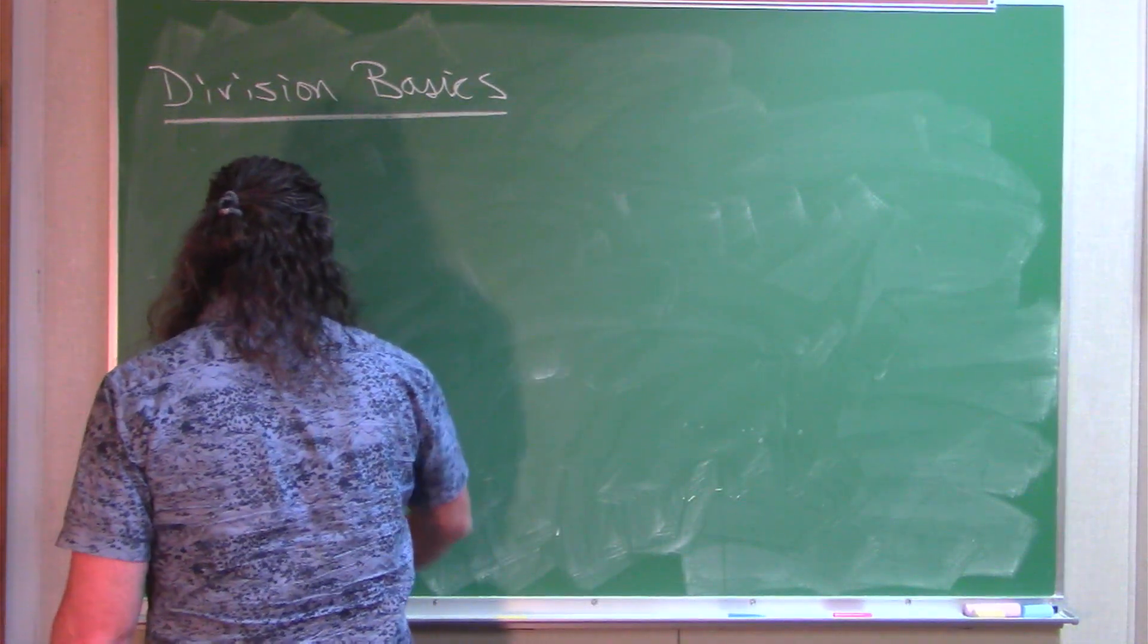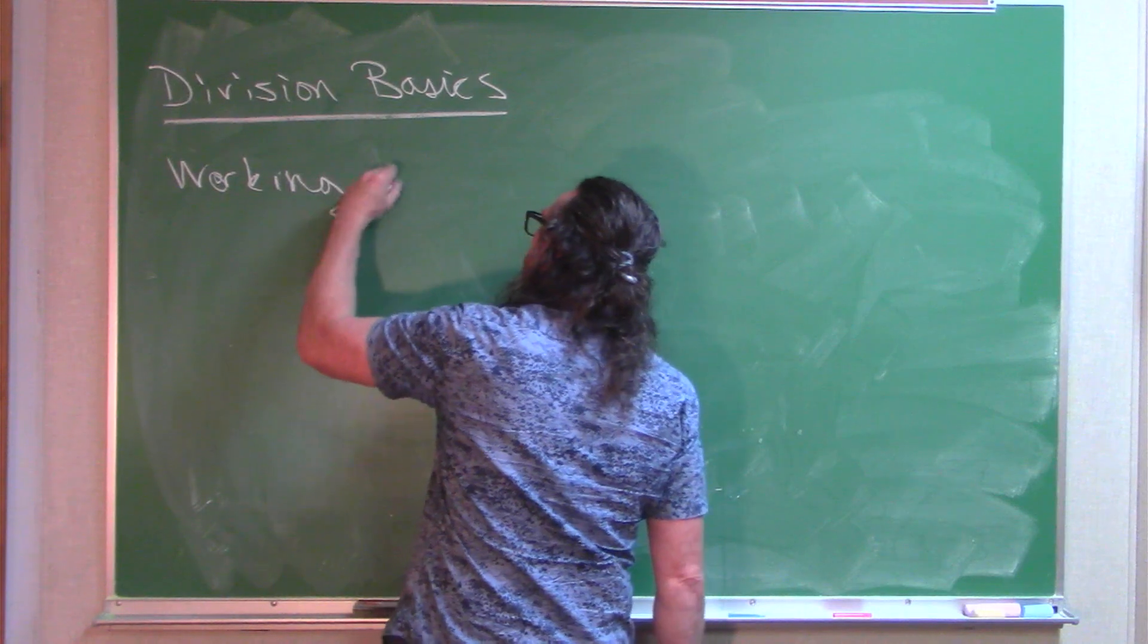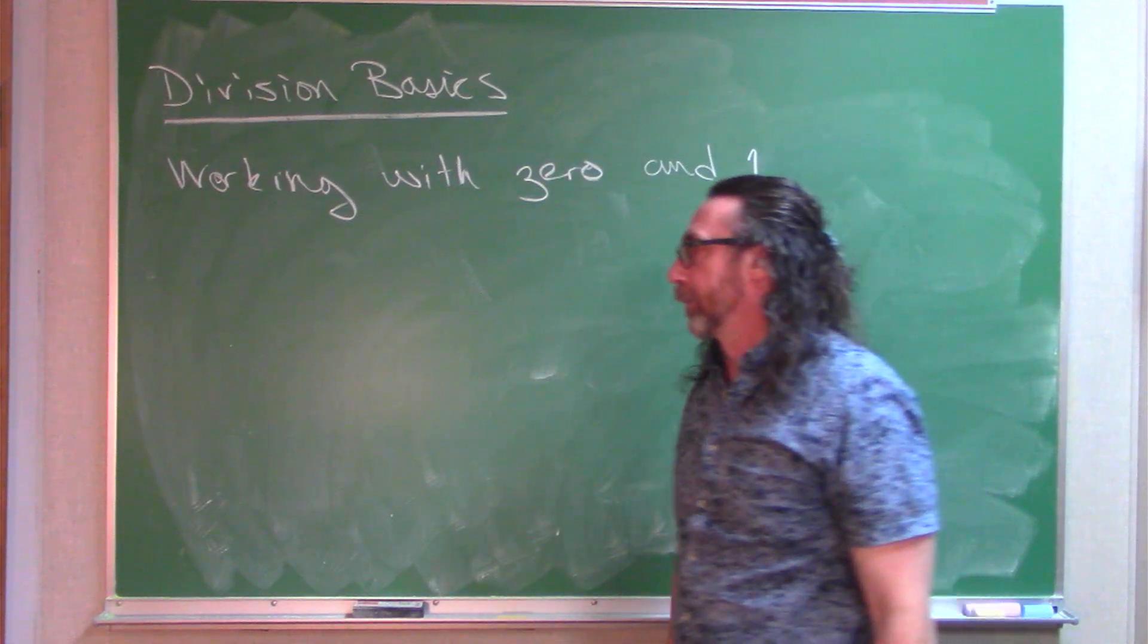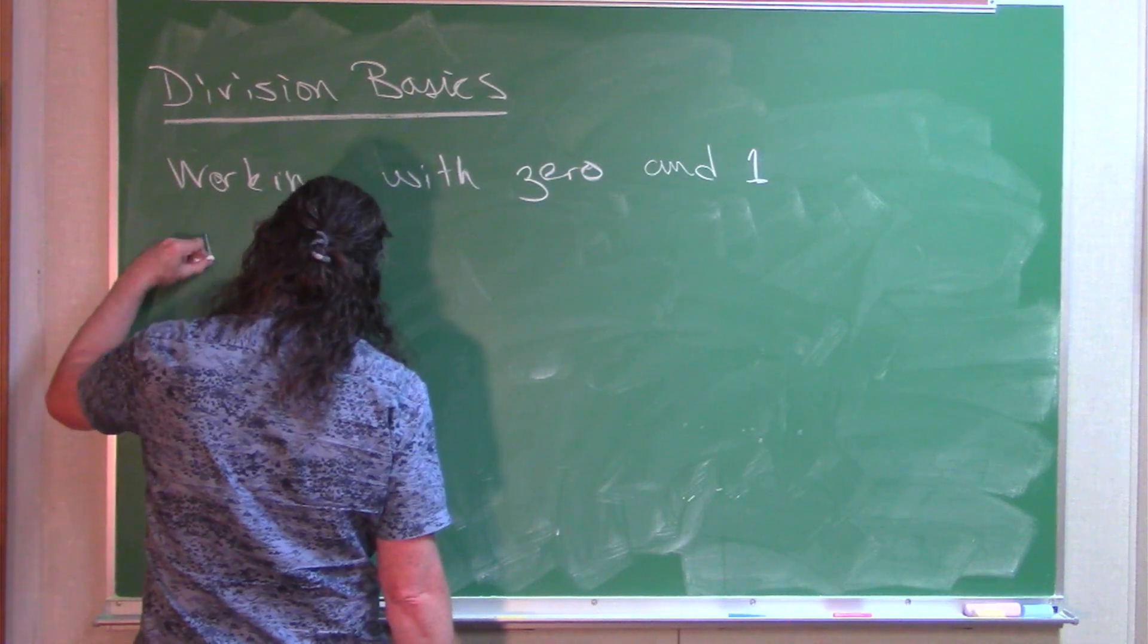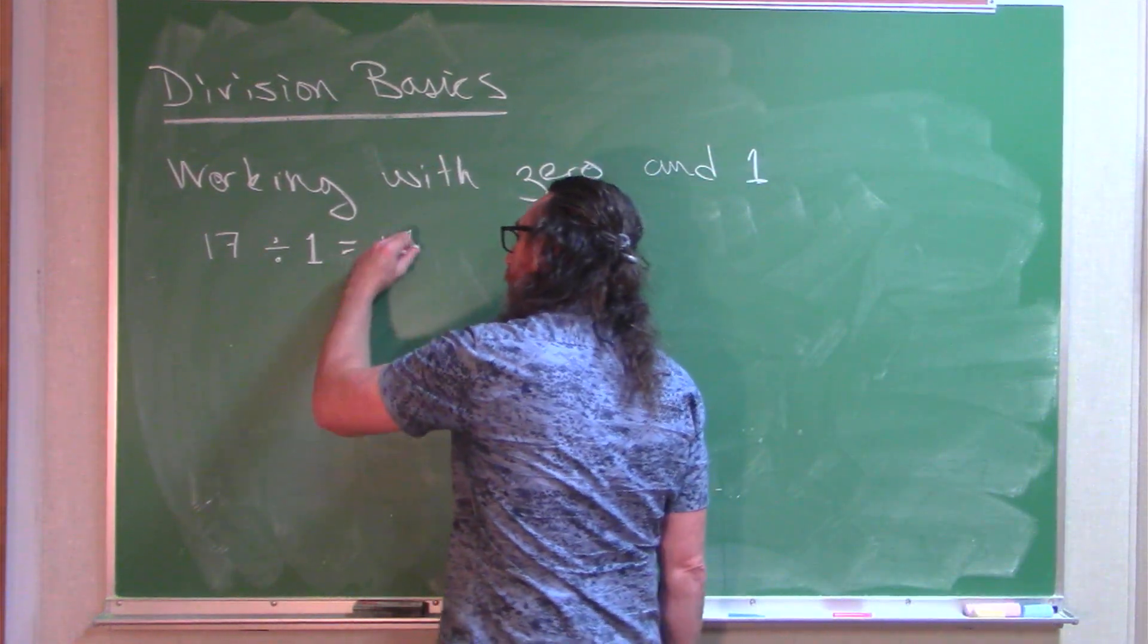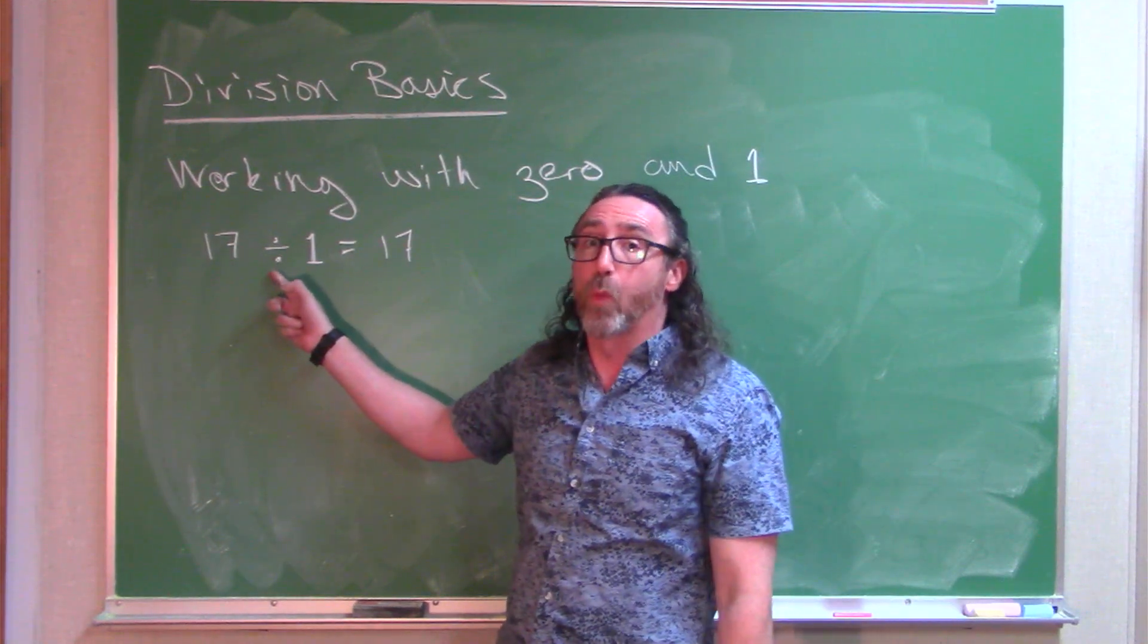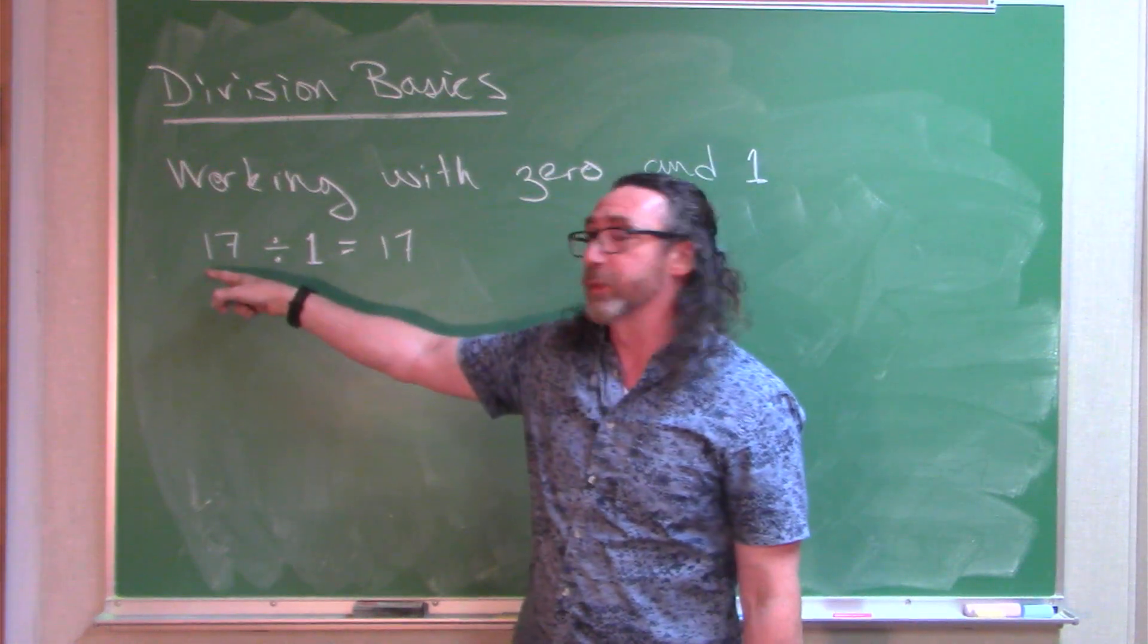One other quick thing to note is how division works when we're using 0 and 1. If I were to take any number I want, let's say 17, and I divide by 1, I get 17. If you use the interpretation that we have put up on this board twice already in this video, you'll understand very quickly why. We write out the 17 objects. How many groups of 1 are in those 17 objects? Well, 17. So whenever you divide by 1, you get whatever you started with.